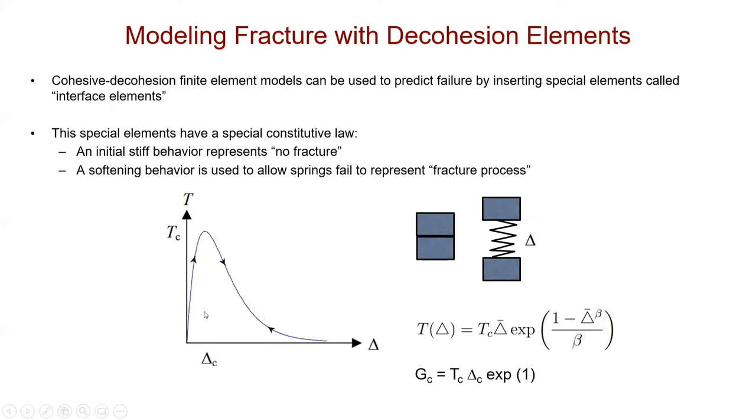The important thing here is that the energy under this curve has to be the critical energy release rate, GC. It tells you how propensity a material is to fracture. If the energy in the system is sufficient to propagate that crack and achieves a value of GC, then the crack will propagate. As I separate these two blocks, it becomes easier to separate them. In the process, I have expended all the energy to make that happen, and that energy corresponds to the critical energy release rate that can be actually measured.